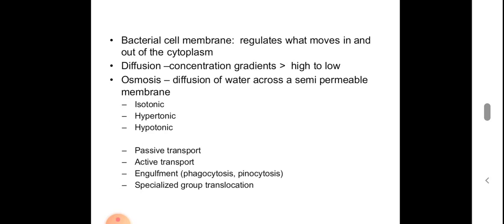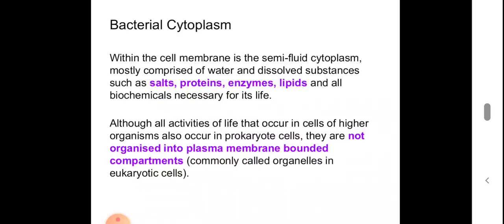About the bacterial cell membrane: it is the plasma membrane that regulates what moves in and out of the cell — it is semipermeable. Diffusion of most molecules occurs from high concentration to low concentration. Next, the bacterial cytoplasm is semi-fluid in nature and is comprised of water and dissolved substances like salts, proteins, enzymes, lipids, and other biochemicals necessary for its life.